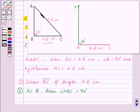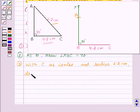Now CA is equal to 6.2 cm. So with C as center and radius 6.2 cm, draw an arc to cut ray BX at point A. Like this, so this is the point A. And our third step of construction is with C as center and radius 6.2 cm, draw an arc to cut ray BX at point A.